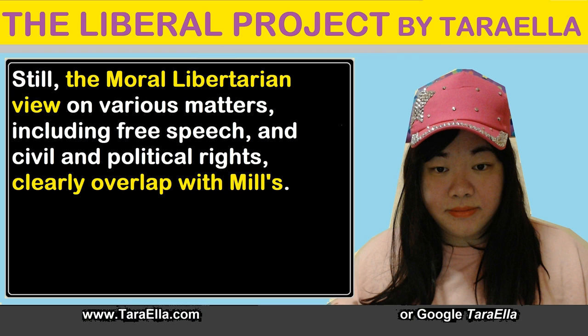Still, the moral libertarian view on various matters, including free speech and civil and political rights, clearly overlaps with Mill's. Thus, moral libertarianism and Mill's utilitarian version of liberalism can be said to have arrived at often similar positions, despite starting out from different fundamental moral outlooks.